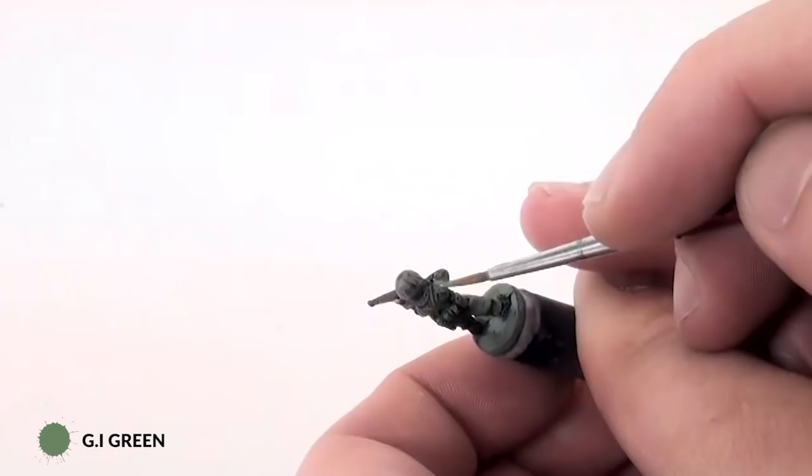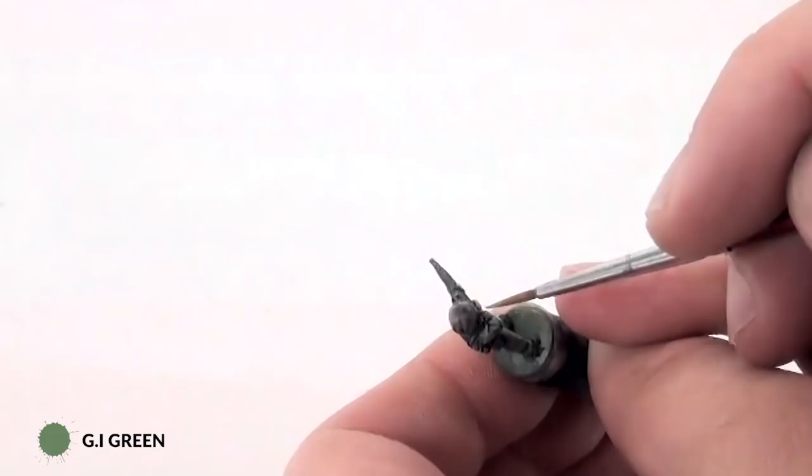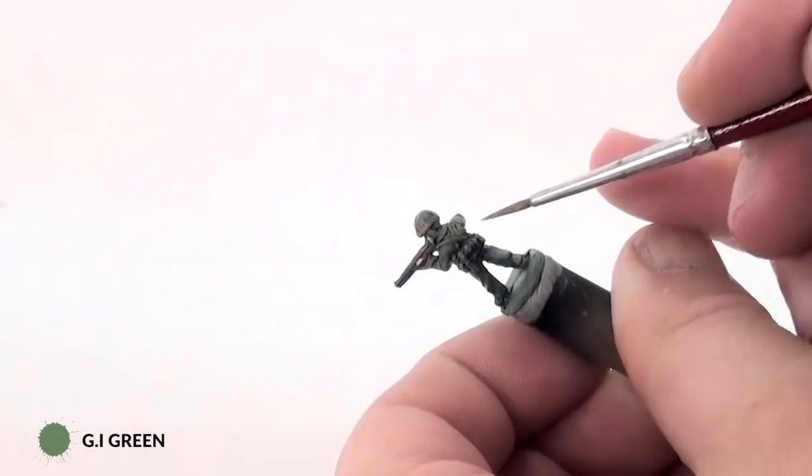If you want to go a stage further, you could lighten the uniform color a little bit again with a little bit of worn canvas, and then you just paint that on the very tips of places where the light is strongest. And it will give it a little bit more contrast to your figure.